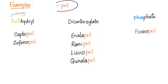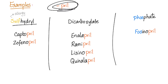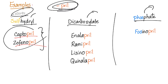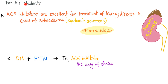Examples of ACE inhibitors — they all end in '-pril,' which is nice. We have three groups: the sulfhydryl group, which includes captopril and zofenopril — avoid these in sulfur drug allergy; the dicarboxylate group, which includes enalapril, ramipril, lisinopril, and quinapril; and the phosphate group, which includes fosinopril.